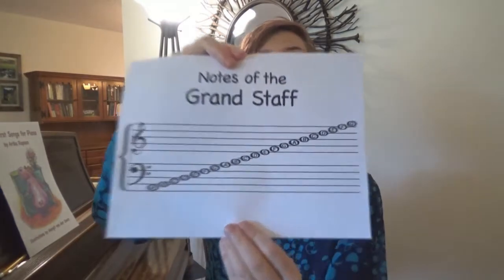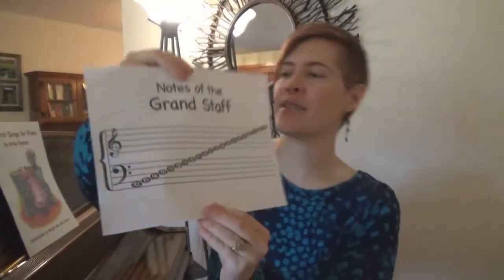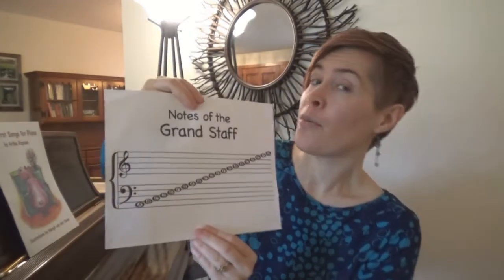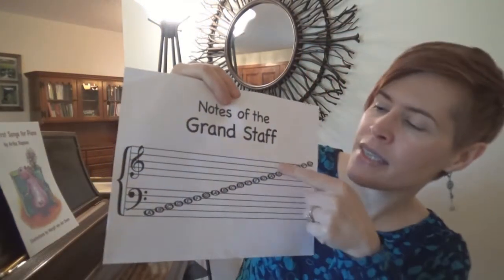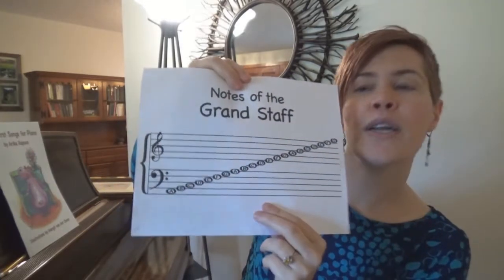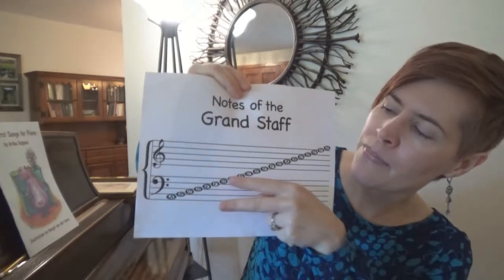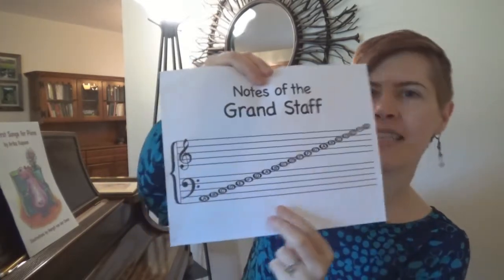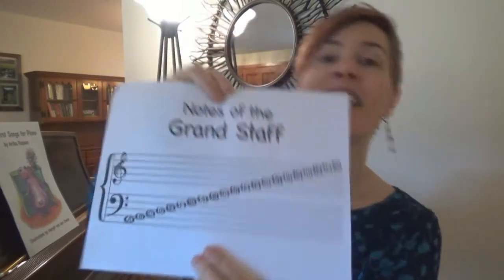Welcome back! In the last video, you learned all about the musical alphabet and the grand staff, which is where we put all of the notes. Remember, the higher notes go on top in the upstairs, and the lower notes go on the bottom in the downstairs. Today we are going to learn all about one note, C, and especially middle C.